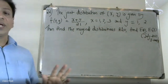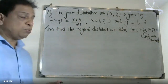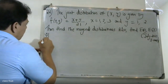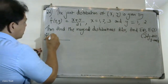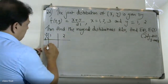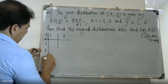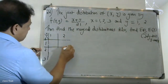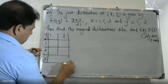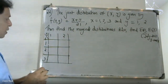We work out the joint probability distribution table. Y takes the value 1, 2 and X takes the value 1, 2, 3. We set up the table with y values across columns and x values down the rows.